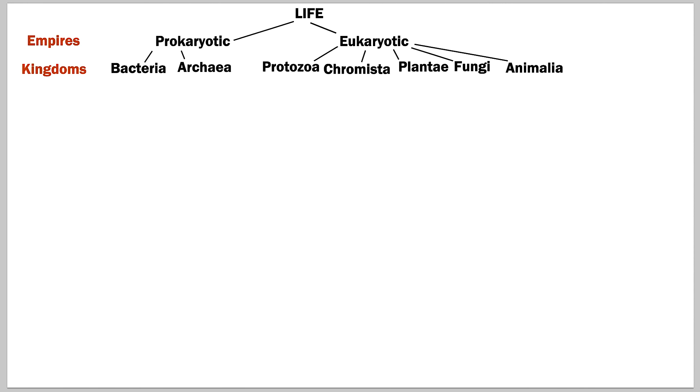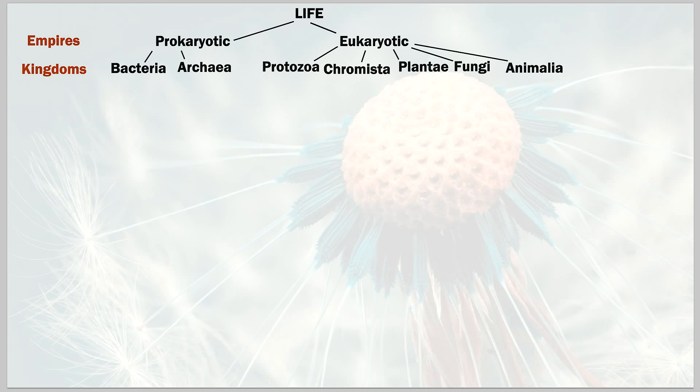Now we go into the next category down: the phylum, or phyla. Phylum is basically the same as 'division.' The word 'division' is more used when classifying plants, while 'phyla' and 'phylum' are more used when classifying creatures and animals.